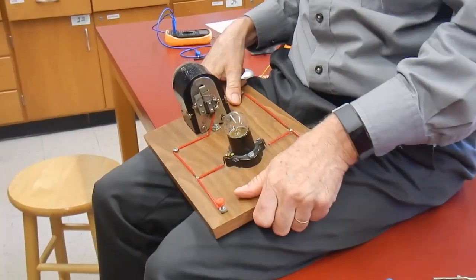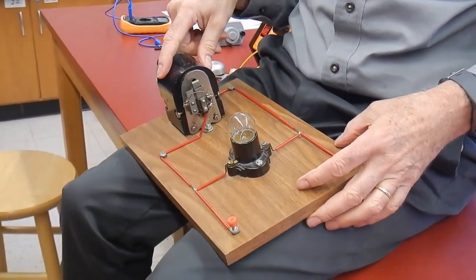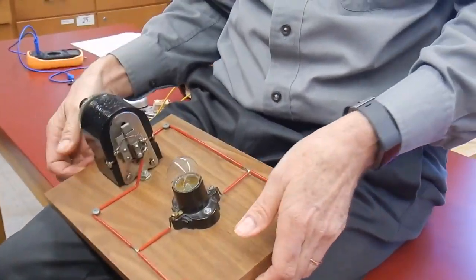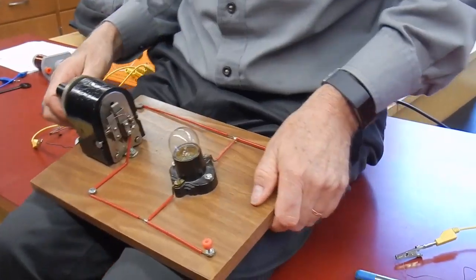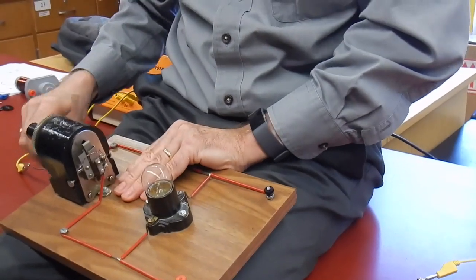This looks like someone took a pencil sharpener and made it into a dynamo. It's really heavy, about the weight of the one I used to have on my bike.